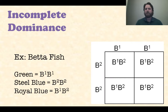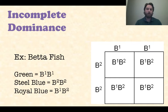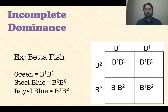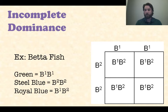Look at this in the Punnett square. You've got parent number one, which is green on the top, and parent number two, which is steel blue on the side. If they mate, all of their offspring will be heterozygous for the two different colors. When you put green and steel blue together, you get royal blue — so no more green and steel blues in this case.